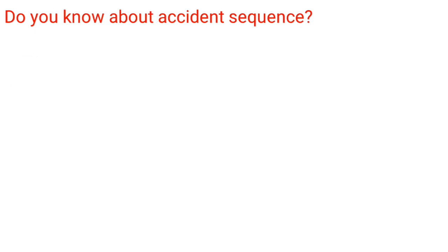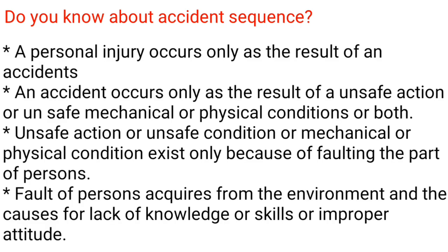What is the accident sequence? A personal injury occurs only as the result of an accident. An accident occurs only as the result of an unsafe action or unsafe mechanical or physical conditions, or both. Unsafe actions or conditions exist only because of faults on the part of persons. Such faults are acquired from the environment and from lack of knowledge, skills, or improper attitude.